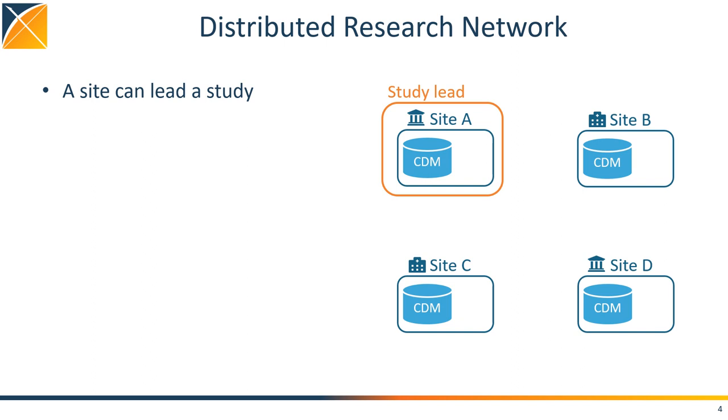If we still want to perform a study across these data, one of the sites can take the lead. There, they develop the code needed to execute the study. These studies can be quite complicated, for example, using complicated logic to define the exposures and outcomes, and using propensity scores to adjust for confounding.